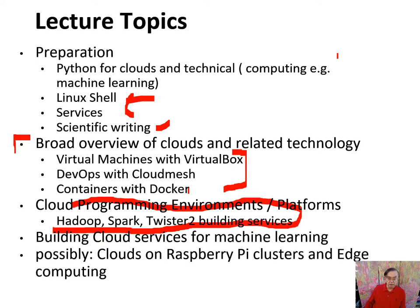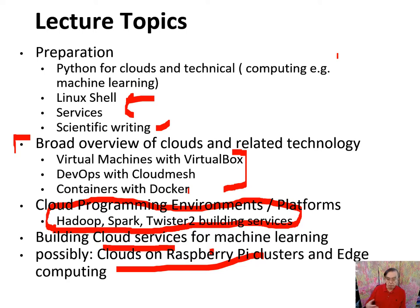Then we'll do some discussion of what you might call the high point of cloud computing: the programming environments. These made a huge impact — with Spark probably being the dominant one today. We have a local project called Twister 2, which actually started at the same time as Spark and inspired some of the Spark ideas. After programming environments, we'll tell you how to build services for machine learning. We will also have various optional projects such as using Raspberry Pi clusters — you can do all of this on Raspberry Pis as well as giant Intel/NVIDIA servers or Google TensorFlow servers.